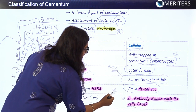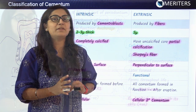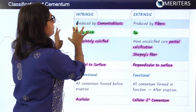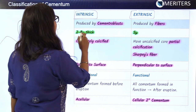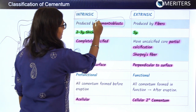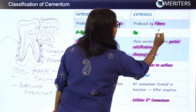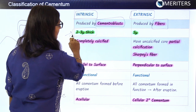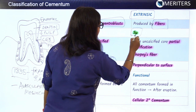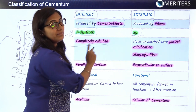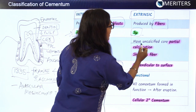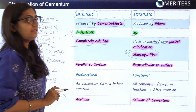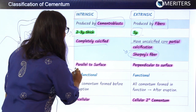Cementum is further categorized as intrinsic and extrinsic. Intrinsic cementum is produced by cementoblast cells, whereas extrinsic cementum is produced by fibers. Regarding thickness, intrinsic is two to three micrometers thick, while extrinsic is five microns. Intrinsic cementum is completely calcified, whereas extrinsic has an uncalcified core with partial calcification, and Sharpey's fibers are present in extrinsic cementum.